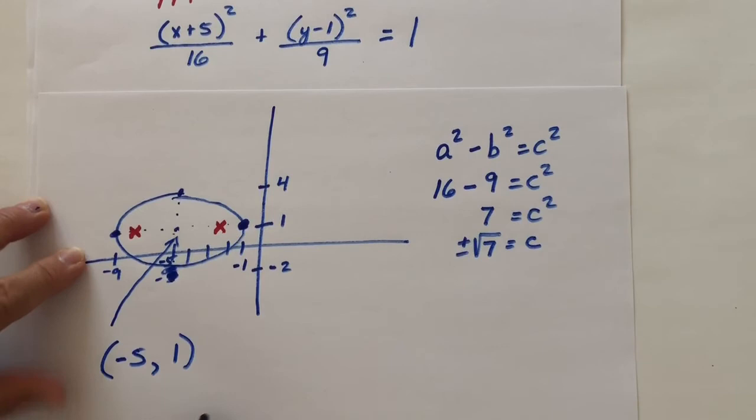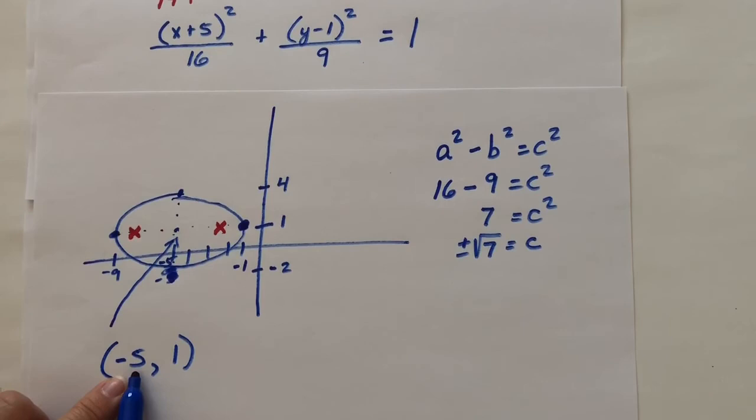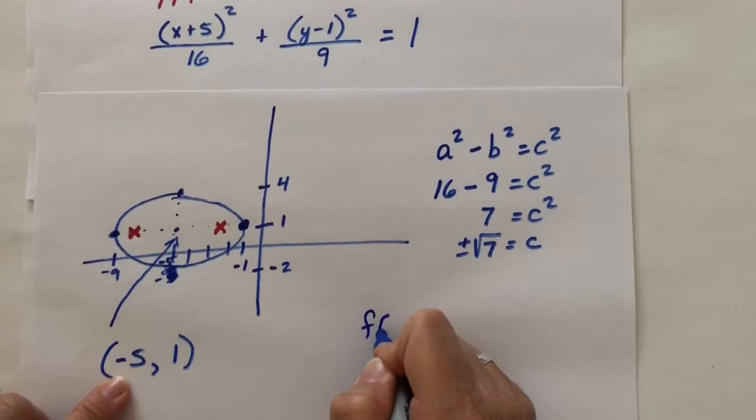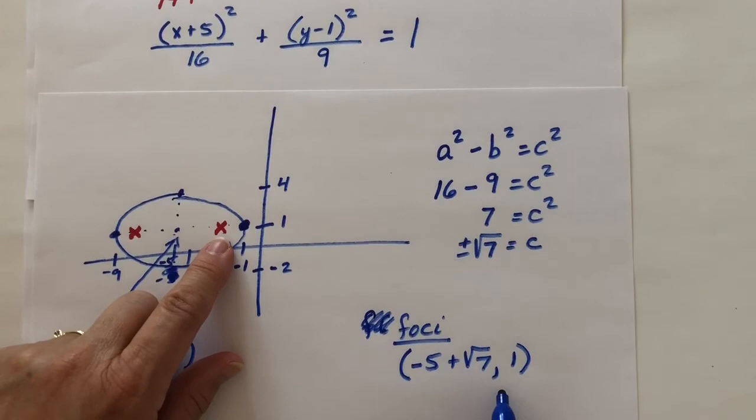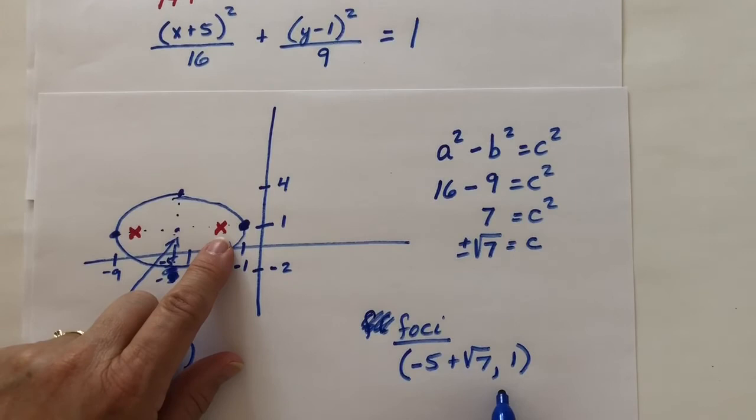If we move right √7, we would add √7 to -5. So our foci, let me write that a little better, would be at (-5 + √7, 1). That would be this point right here. And from center, I would move left √7. So (-5 - √7, 1) as well.